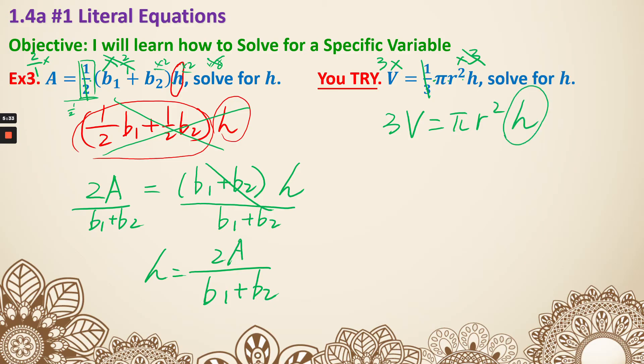We're solving for h. That means we need to get rid of the πr². So divide both sides by πr². We would get h = 3V/(πr²). That is number four.